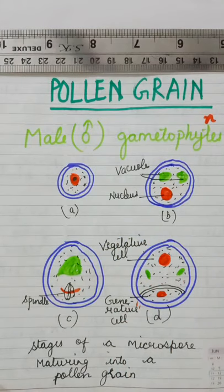Pollen grains are haploid, uninucleate, minute spores produced in large numbers as a result of meiosis in microspore mother cells inside the microsporangia.